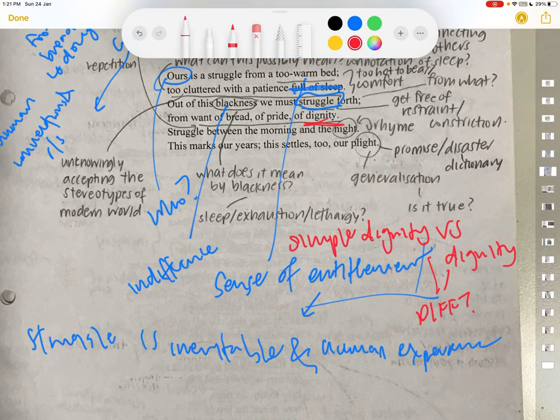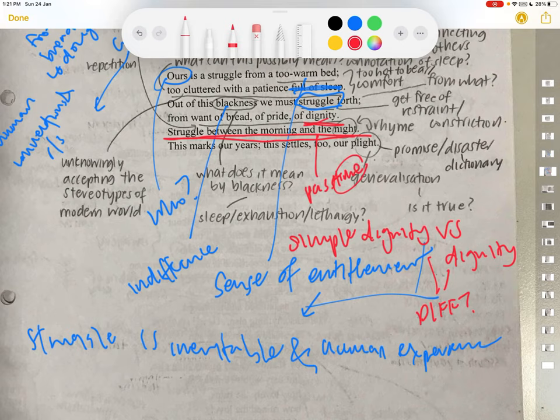Struggle between the morning and night. This marks our years. This settles to our plight. Okay, before we end it, I'm going to talk about this. Struggle between the morning and the night. So struggle to pass time. So struggle, there's also an element of time. Because the struggle is something that will continue happening. The cyclic nature of time. There's also the element of time in the struggle. It depends on the duration of the struggle, but ultimately it takes up time. And it's also a battle between, it's also a battle against time.